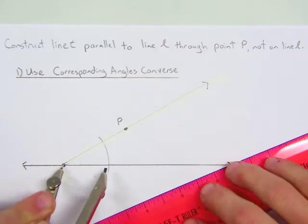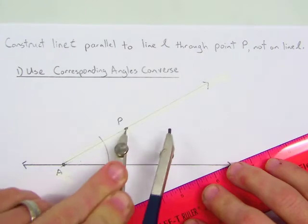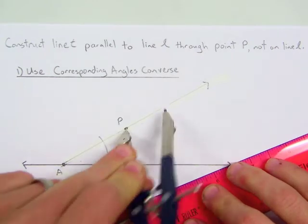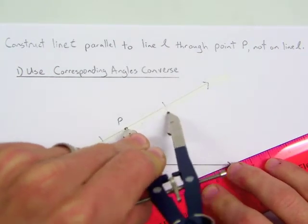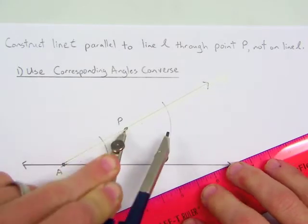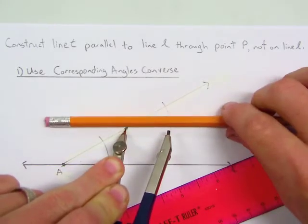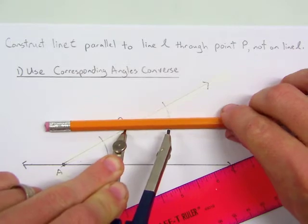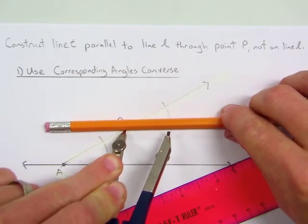Now we want to move the point of our compass up to point P and draw the same arc. And I like to imagine where that parallel line would be so that when we draw the arc, it's sure to intersect it.